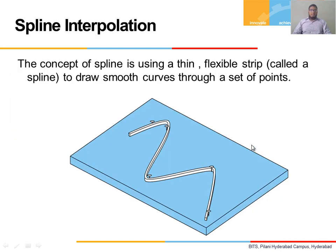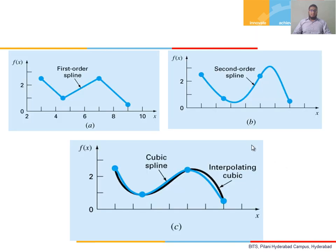So what is spline interpolation? The concept of spline interpolation is simply a thin, flexible strip that connects a number of points. These points are also called nodes. To understand splines, consider drawing different functions between intervals. If we connect two intervals in such a way that they are continuous, then they are called a first-order spline.